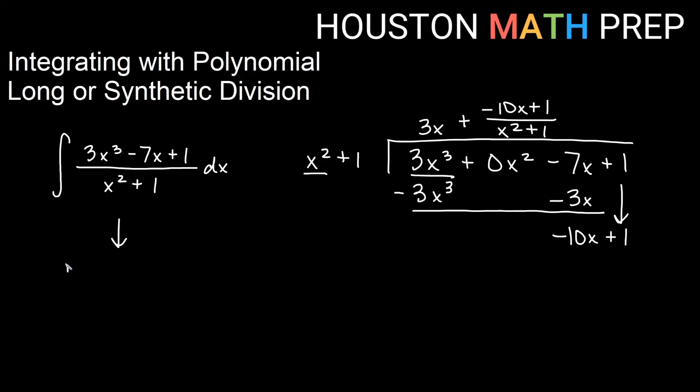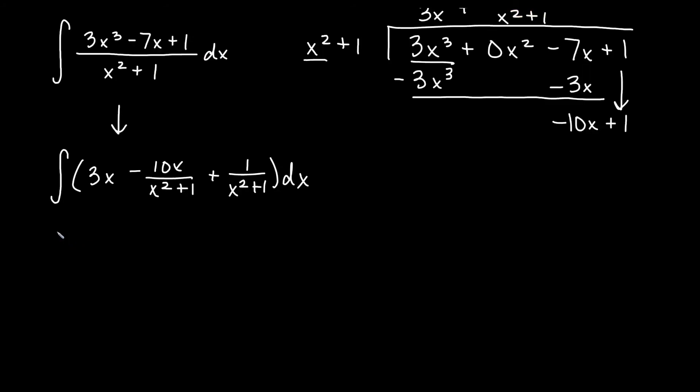We're going to change this to integral of 3x. I'm going to write it this way and split each piece. I'm going to say negative 10x over x squared plus 1, and then I'm going to put the plus 1 separate over the x squared plus 1. Moving down, the antiderivative of 3x will get power rule, power goes up by 1, divide by the new power, so 3 halves x squared. If we do this one, we would say u equal to x squared plus 1 and du would be 2x dx. This is 5 times as much as 2x dx, so we would say minus 5 integral of du over u.